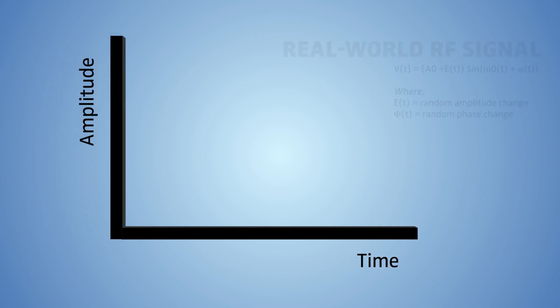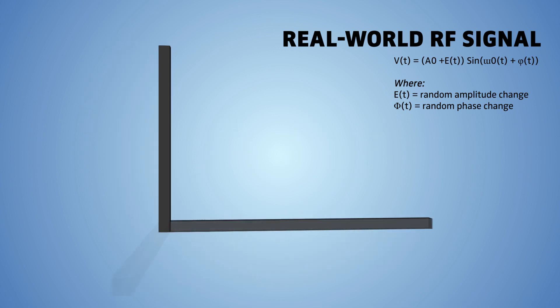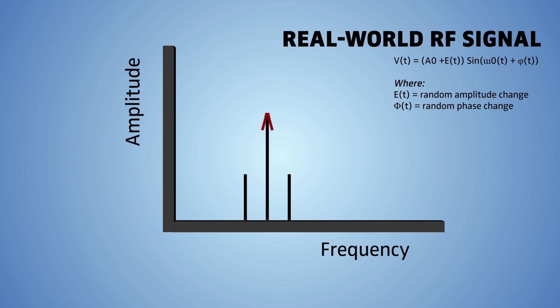Real-world signals have random fluctuations in amplitude and phase over time. This results in spectrum spreading in the frequency domain where unwanted sidebands develop on both sides of the carrier. These random frequency instabilities result in phase noise.